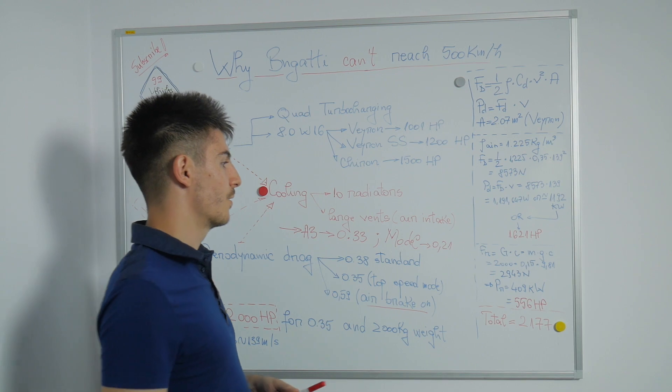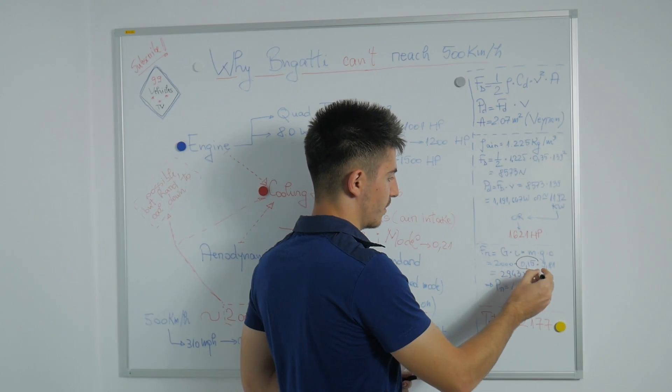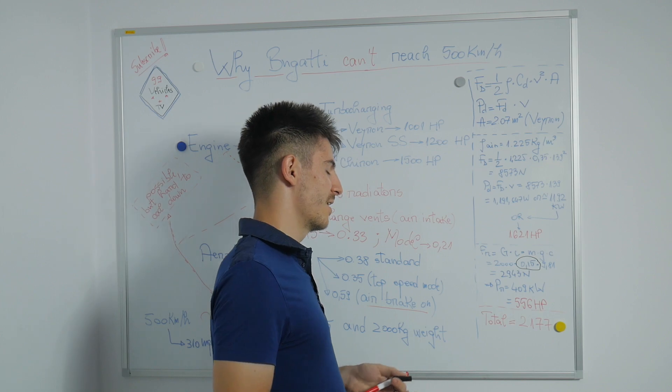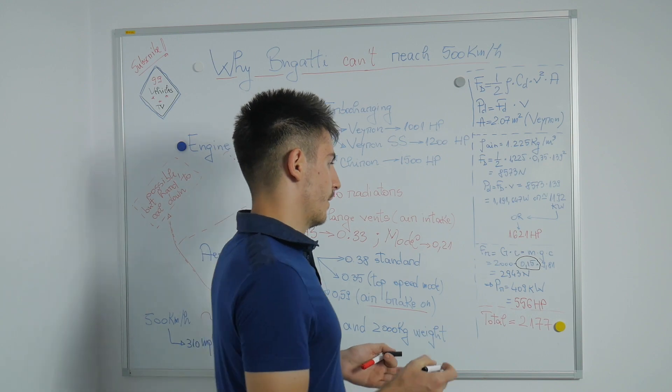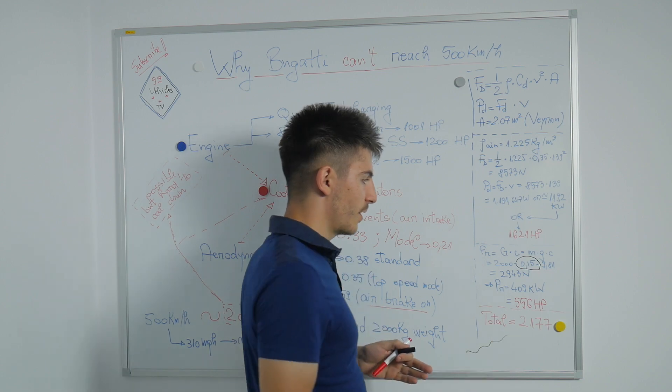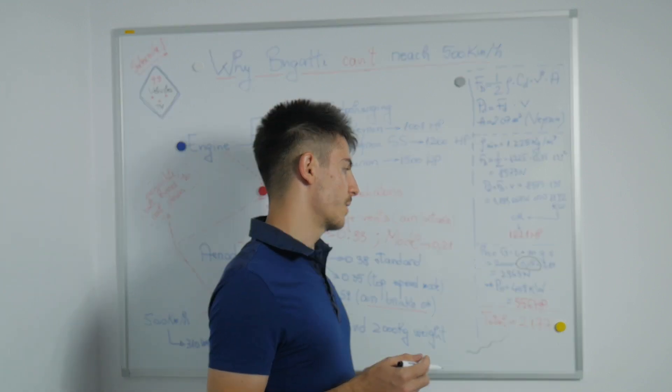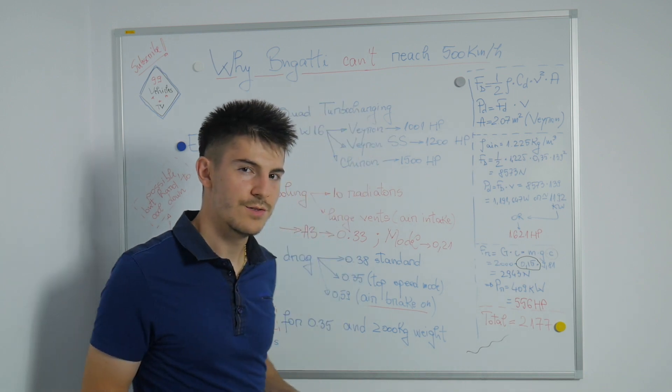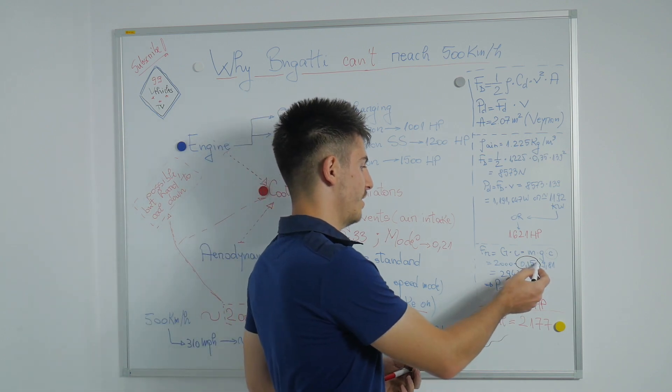In the rolling resistance area, I took this value of 0.15 on dry asphalt, which is a lot bigger than driving at a normal speed, let's say 80 kilometers per hour. As you may probably know, the rolling resistance forces exponentially increase at higher speeds. At 250 kilometers per hour, this coefficient for dry asphalt is around 0.06, so at 500 kilometers per hour I have approximated this value.